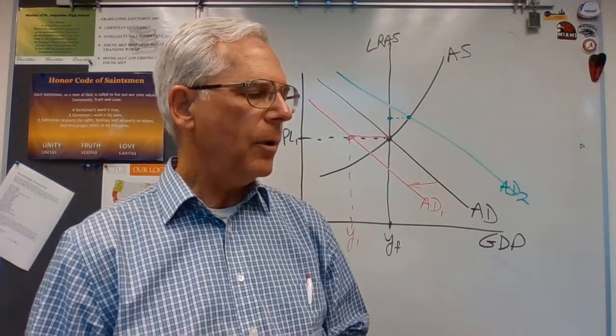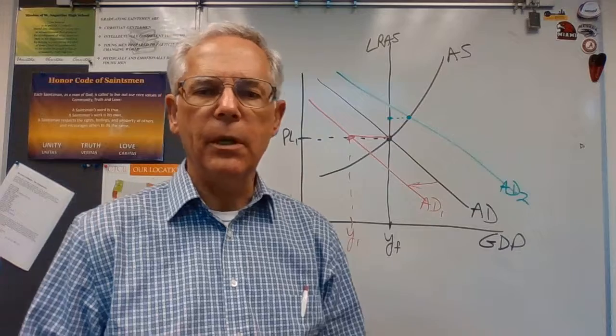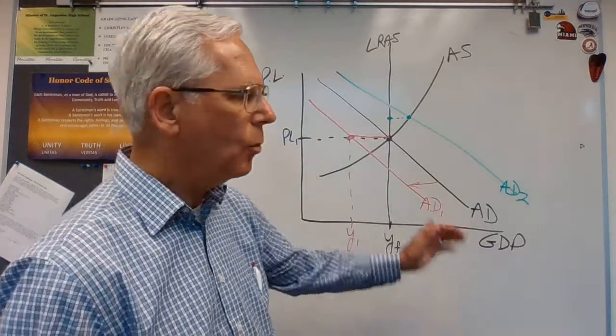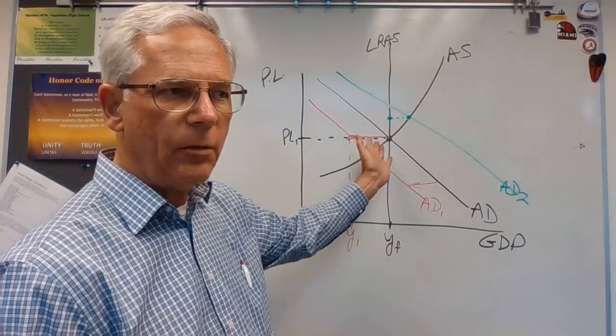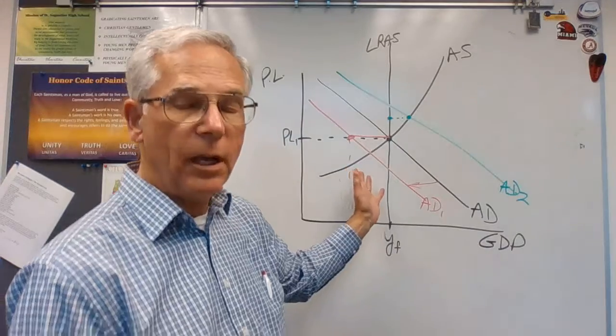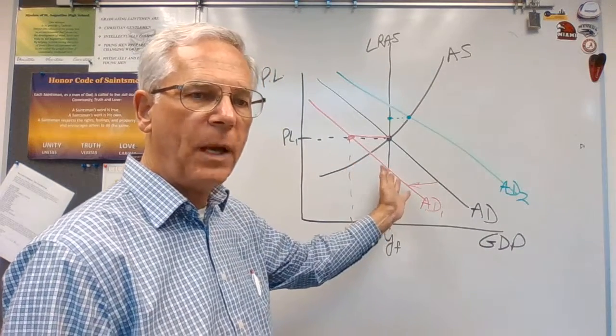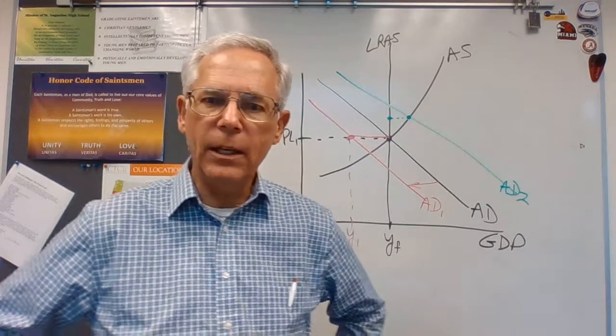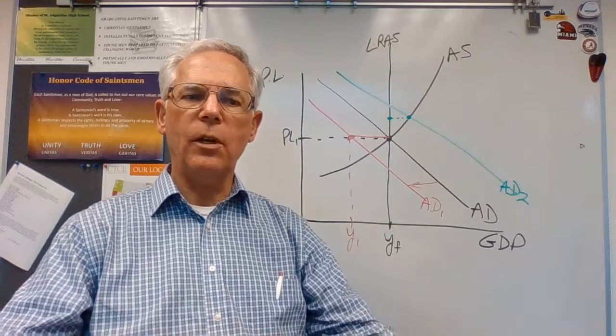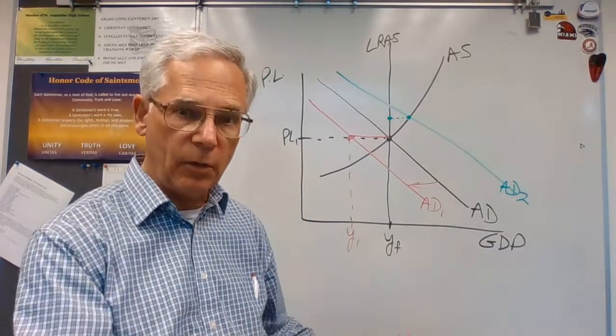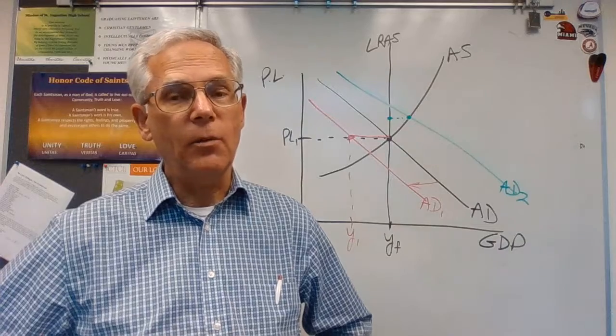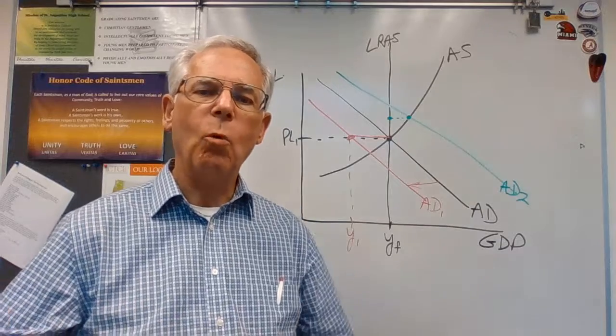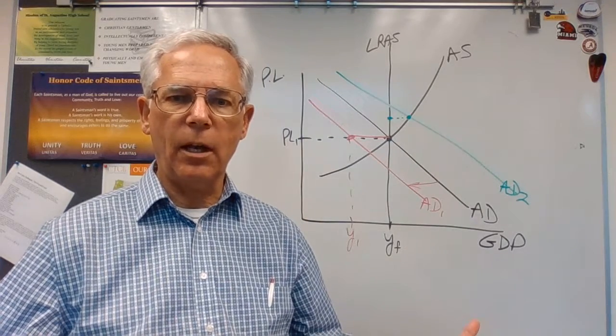And then the third problem is really a big issue, and that is offsetting state and local finance issues. So when we go into recession, the federal government is going to try to go into deficit spending and have a stimulus package to push AD back to the right. But what's going to happen with the state of California and its budget? The state of California is going to see reduced revenues because of the recession, but the state of California has to have a balanced budget. So if tax revenues are going down, what are they going to do with spending in the state of California?